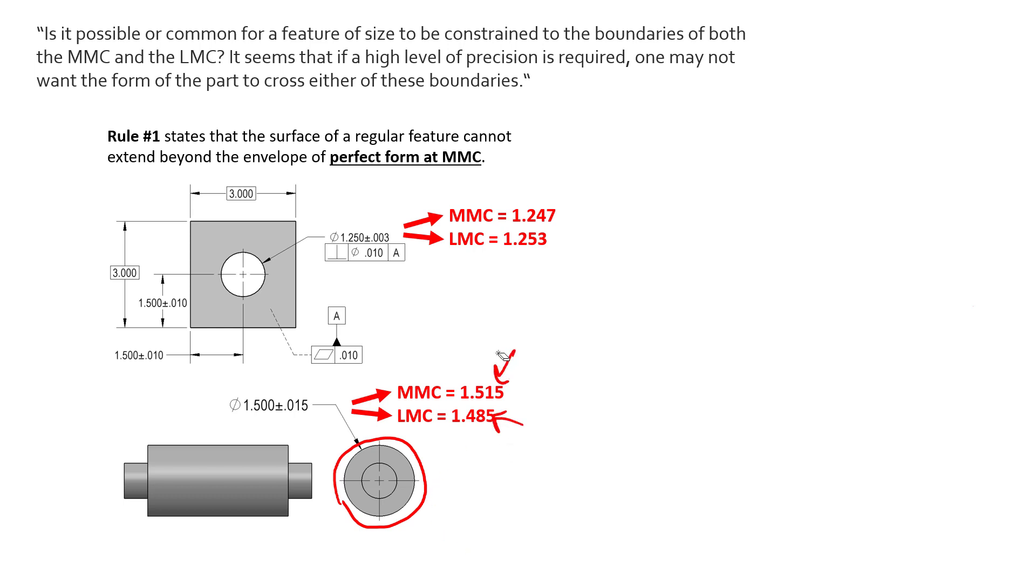So what this means is if we picture this square block with a hole in it, and now we have our hole that maybe has a little bit of form error, if there's form error to that hole, it cannot extend into this envelope of perfect form.